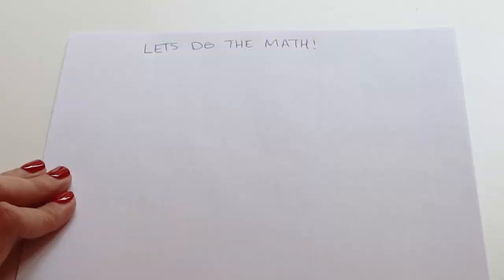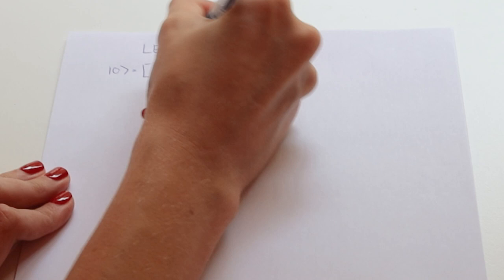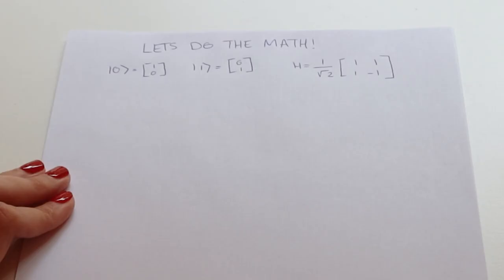Finally, let's look at the actual math behind this and why this actually works. Let's write out the initial states and the Hadamard gate. Now the first step for us as Alice is to apply the Hadamard gate to our initial state. So let's pick the one state.